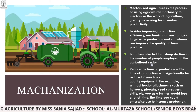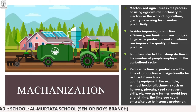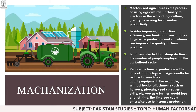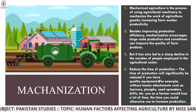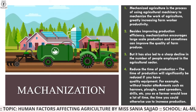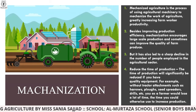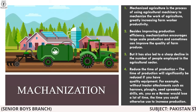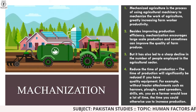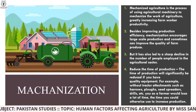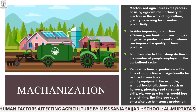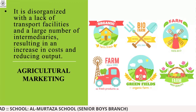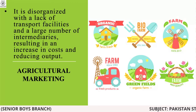However, mechanization has also led to a sharp decline in the number of people employed in the agriculture sector, resulting in unemployment. The time of production will significantly be reduced with quality equipment. For example, without tractor attachments such as ploughs, seed drills, etc., a farmer would lose a lot of time that could otherwise be used to increase production.